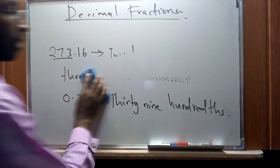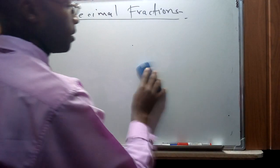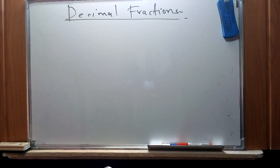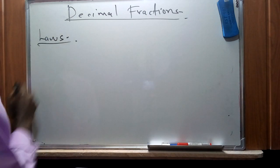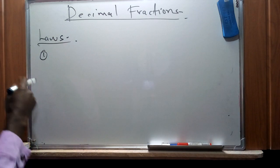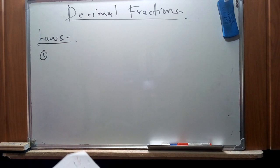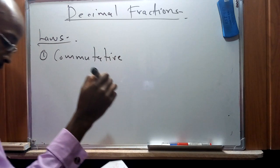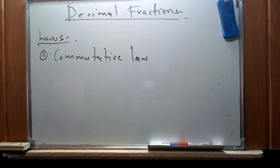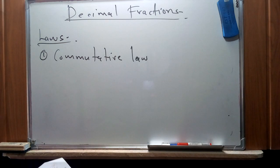We're going to look at a few examples of how to perform operations with decimal fractions. Like real numbers, decimal fractions obey three basic laws of arithmetic. We will list these laws and see how they apply. The first law is the commutative law — a law of arithmetic operations that is also applicable to decimal fractions.